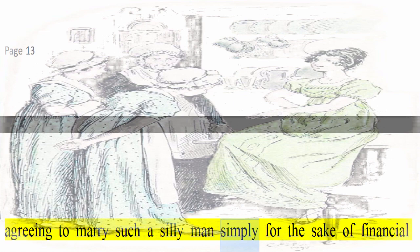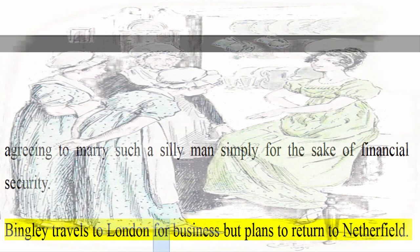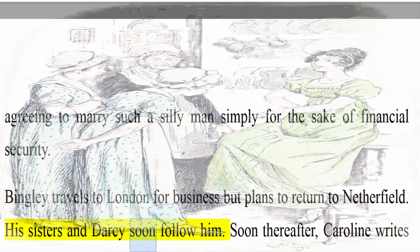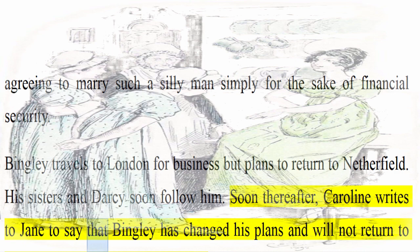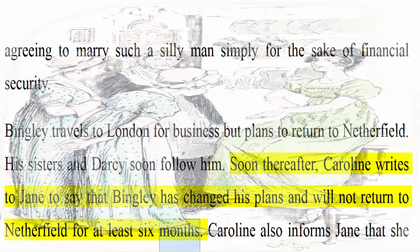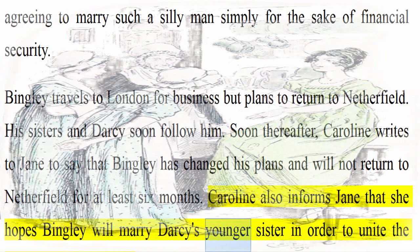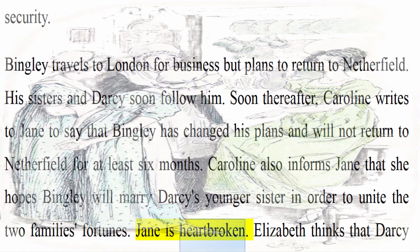Bingley travels to London for business but plans to return to Netherfield. His sisters and Darcy soon follow him. Soon thereafter, Caroline writes to Jane to say that Bingley has changed his plans and will not return to Netherfield for at least six months. Caroline also informs Jane that she hopes Bingley will marry Darcy's younger sister in order to unite the two families' fortunes. Jane is heartbroken. Elizabeth thinks that Darcy and Bingley's sisters have somehow managed to dissuade Bingley from proposing to Jane.